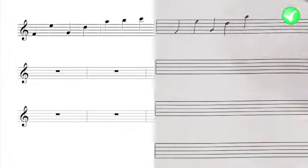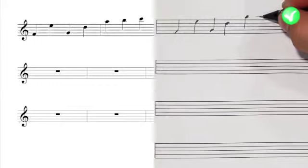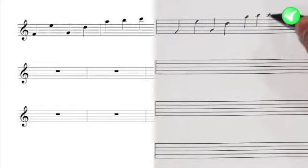The standard length for a stem is one octave. However, an exception to this rule is when a note is more than one ledger line above or below the staff. In that case, the stem extends to the center line.